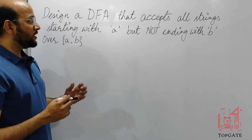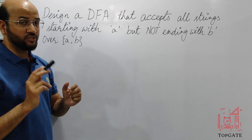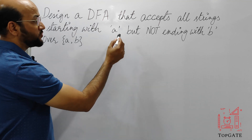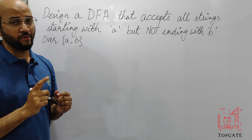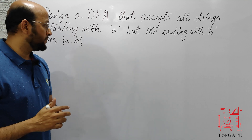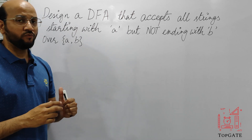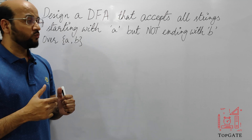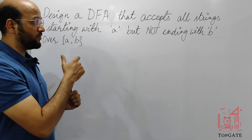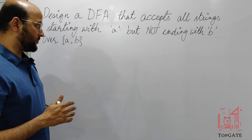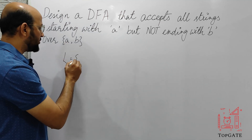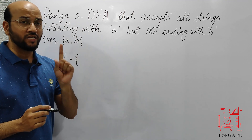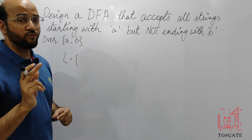In the previous lecture we have seen the designing of a DFA that accepts all the strings that start with A and they end with B. But in this one we have to see that the strings should not end with B — they should start with A but they should not end in B. So before designing the DFA we will first see what is the language and what are the shortest possible strings that can be generated.